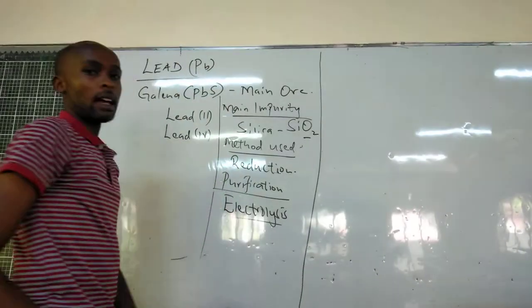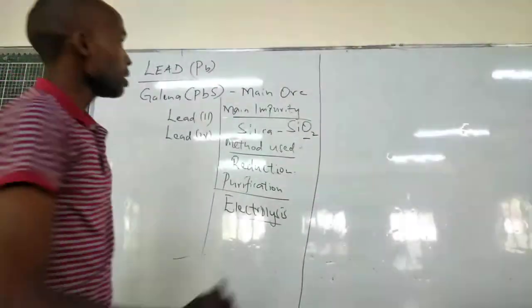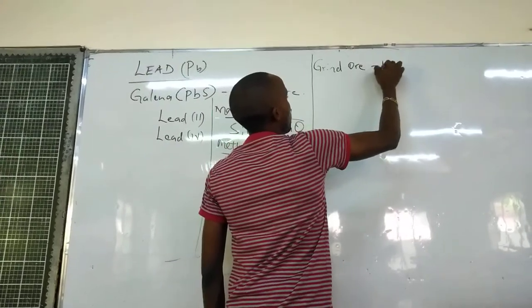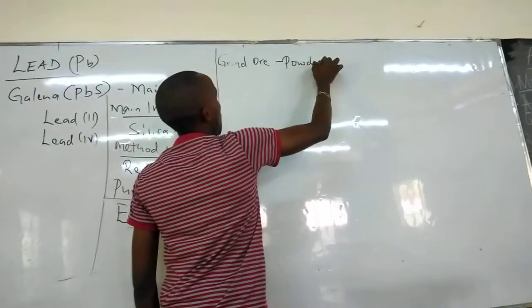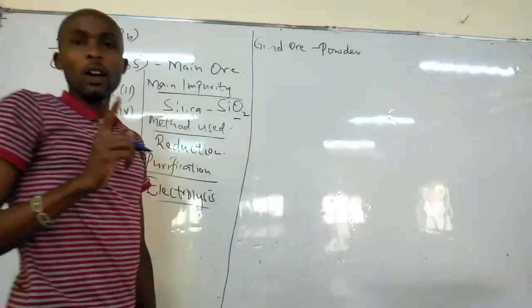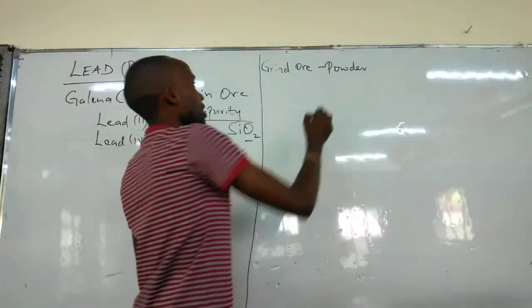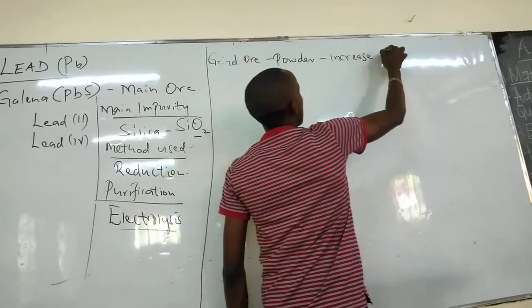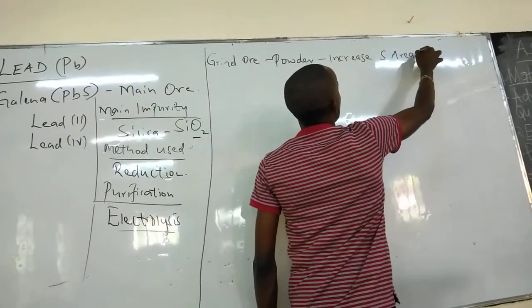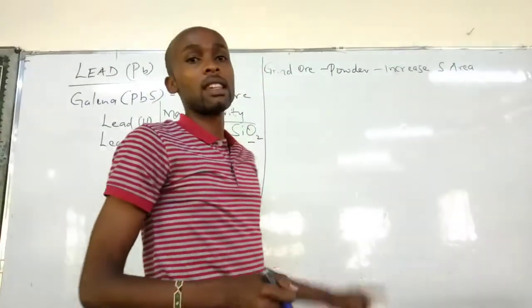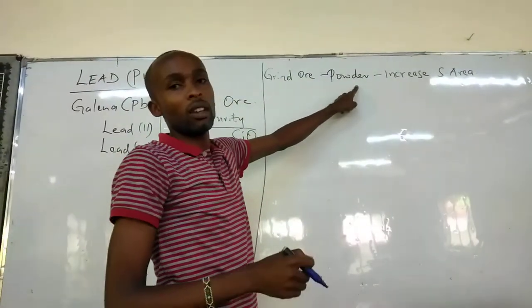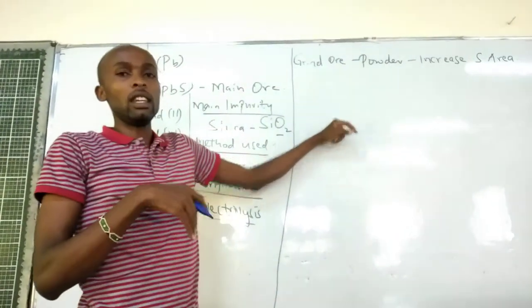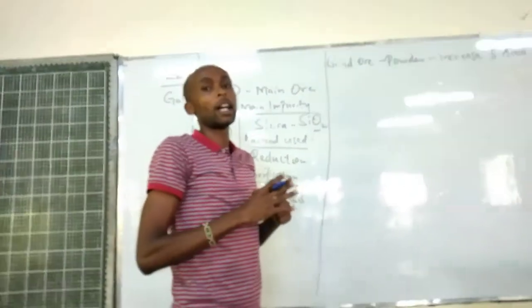So, what is done during reduction? First of all, you have to grind the ore into powder. And whenever you are grinding the ore into powder, the main reason is to increase surface area. In powder form, a solid has a larger surface area than in granulated forms or other bigger particles.